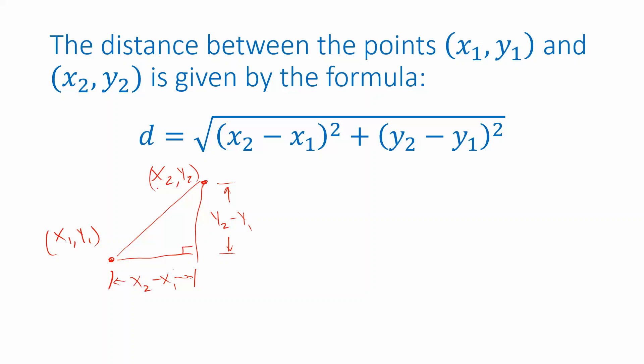And of course, if you want to find the length of this line connecting the two points, the Pythagorean Theorem says the length of that hypotenuse is just the sum of the squares of the lengths of the other two sides. And the lengths of the other two sides are x2 minus x1 and y2 minus y1.